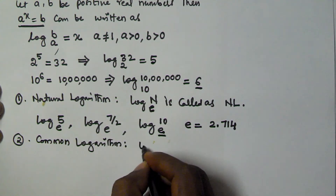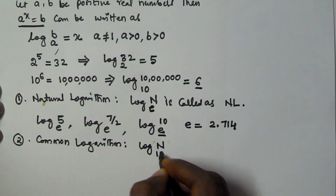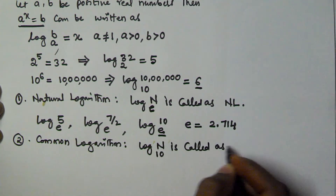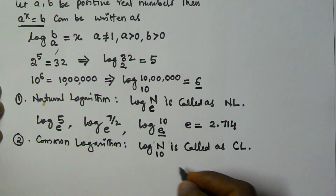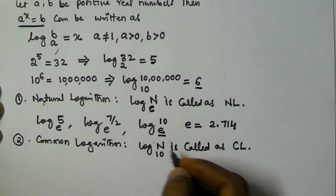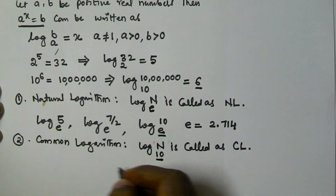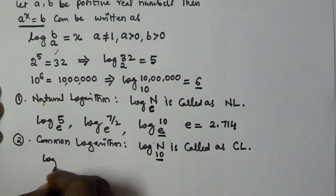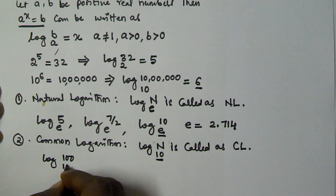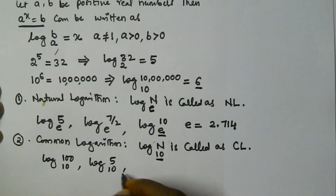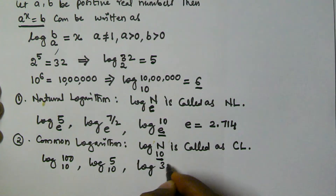The second type is common logarithm. When the base is 10, it is called a common logarithm. Some examples of common logarithms are log 100 base 10, log 5 base 10, and log 30 base 10.